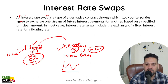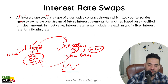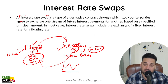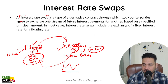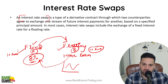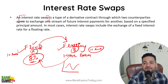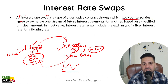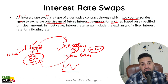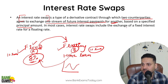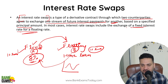What these two people are going to do is exchange cash flows — a regular stream of cash flows on every month. It is a derivative contract in which two counterparties agree to exchange one stream of future interest payments for another: one stream fixed, another stream floating, based on a specific principal amount. In most cases, interest rate swaps include the exchange of a fixed interest rate for a floating interest rate — that is the most common scenario.